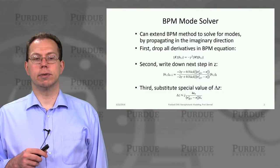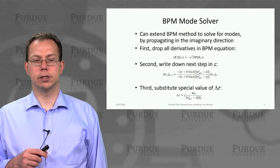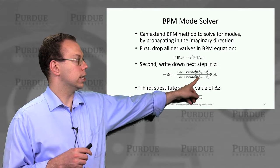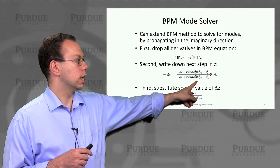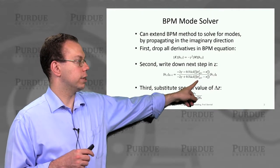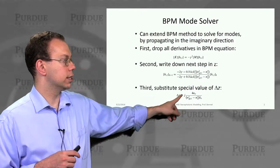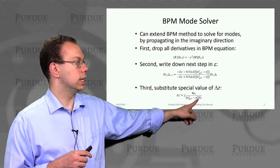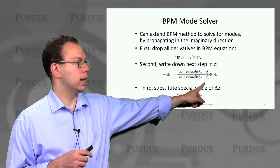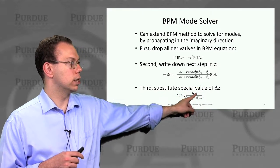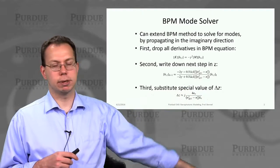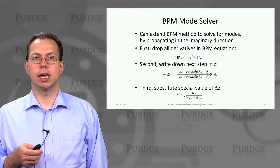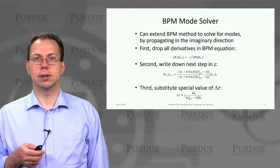We can write down the propagation in the Z direction, and you can see it's fairly complex — it depends on the effective refractive index, which we don't necessarily know in advance. We actually substitute a special value of delta Z, which would offset the n-effective squared minus n-naught squared, so that we could have a smooth propagation and only survive one mode as we propagate through a few steps in delta Z.